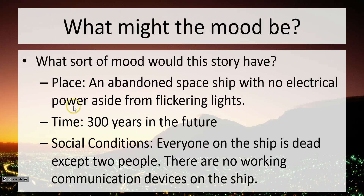Here's an example. What sort of mood would this story have? The place is an abandoned spaceship with no electrical power aside from a few flickering lights. The time is 300 years in the future. The social conditions — the reality of their existence — is that everyone on the ship is dead except two people, and there are no working communication devices. What kind of mood do we have? Most people would probably feel tense, scared, eerie, or creepy — and that would be on purpose. That setting is supposed to make us feel that way.